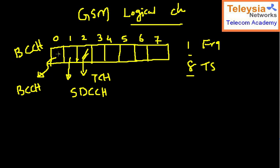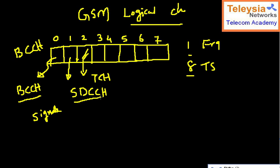In each physical time slot, we can carry different types of channels — channel means the information. You can see that time slot zero is going to radiate signaling, the first time slot is going to radiate SDCCH, and time slot two carries the TCH channel. The remaining time slots can all be assigned as TCH time slots to transmit traffic.